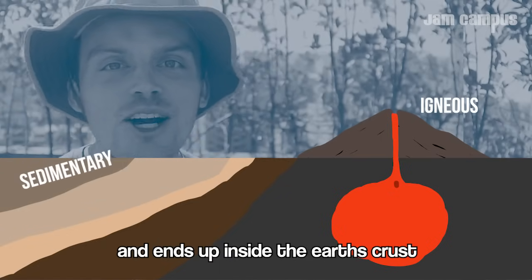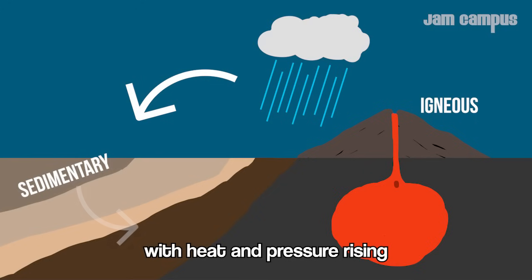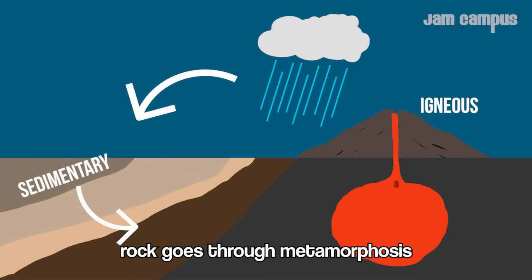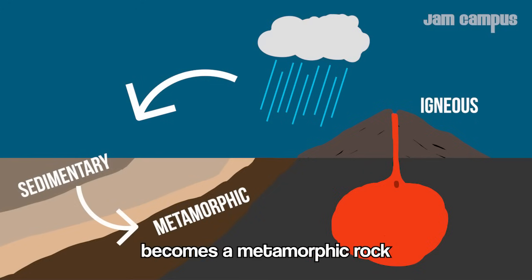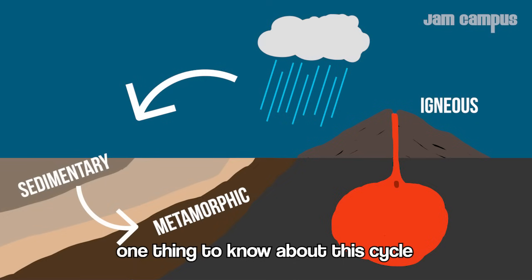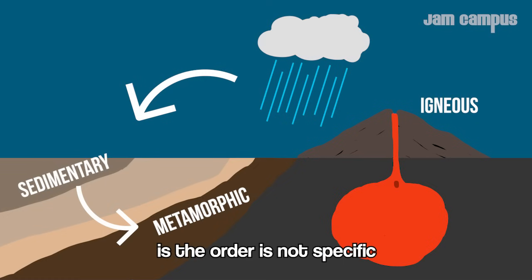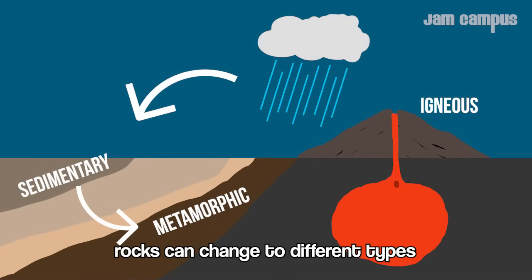When that rock gets covered and ends up inside the earth's crust, heat and pressure cause it to go through metamorphosis and become metamorphic rock, and then the cycle starts over again. One thing to know: the order is not specific — rocks can change to different types based on their environment.